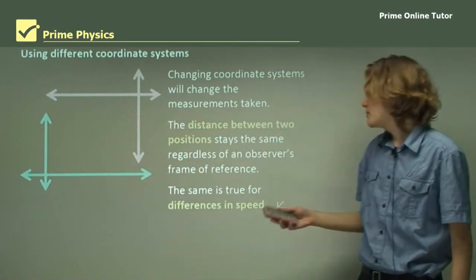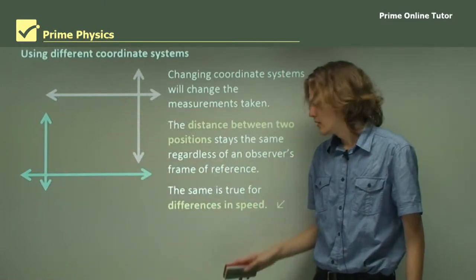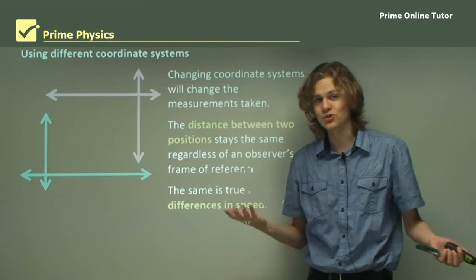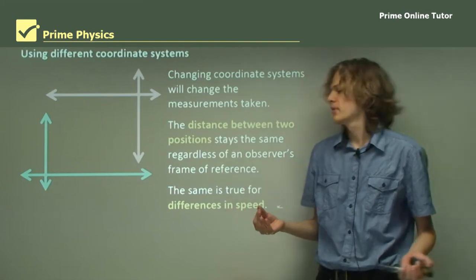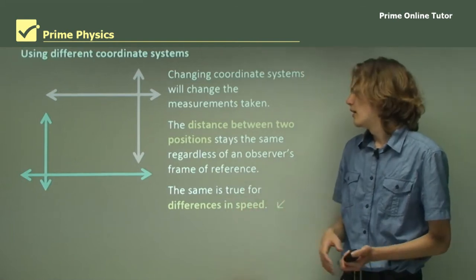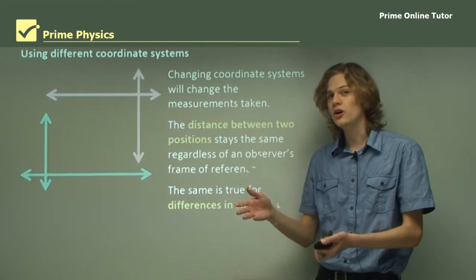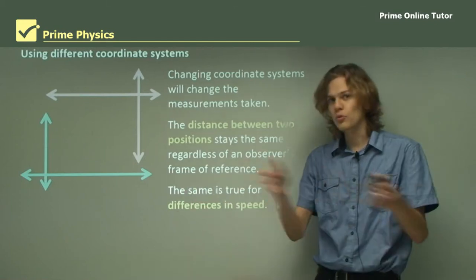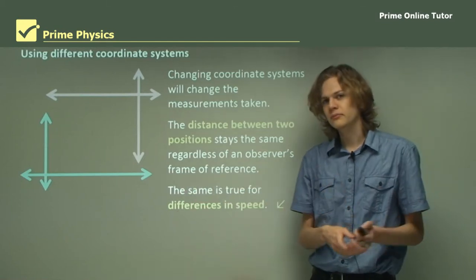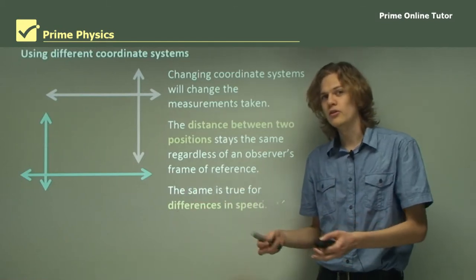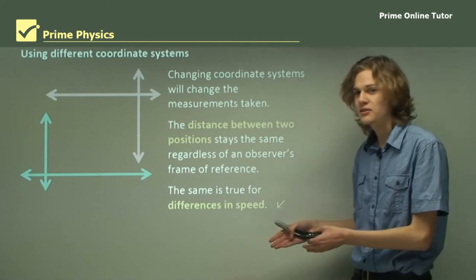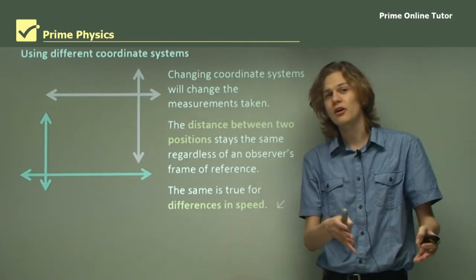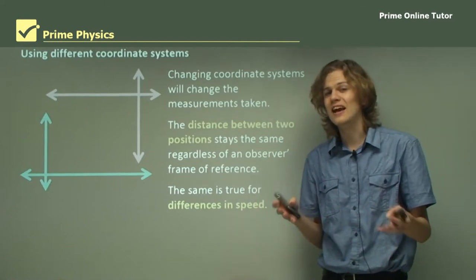The same is true for differences in speed. If you are in a coordinate system that's moving — say a train — and you compare the difference between two cars that are both moving, then whether you're on a train or at the station, you'll be able to tell that one car is faster than the other, and by exactly how much.